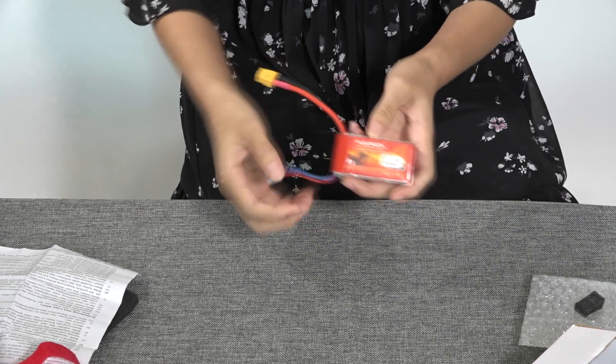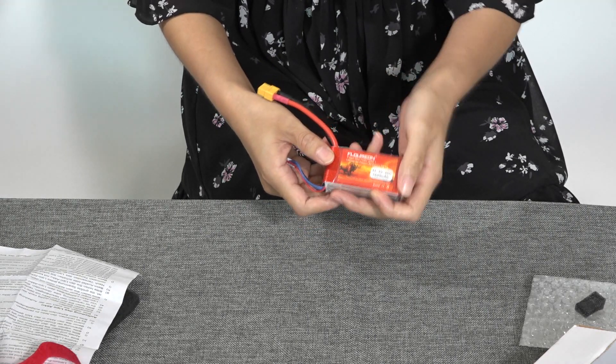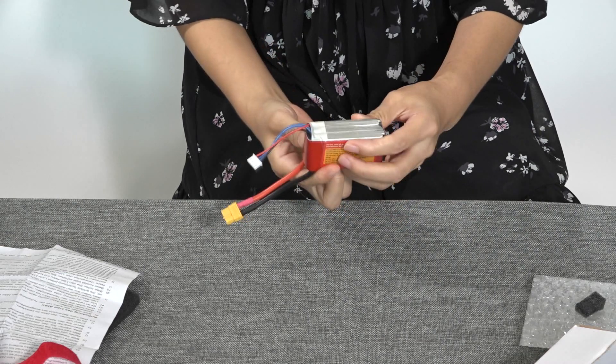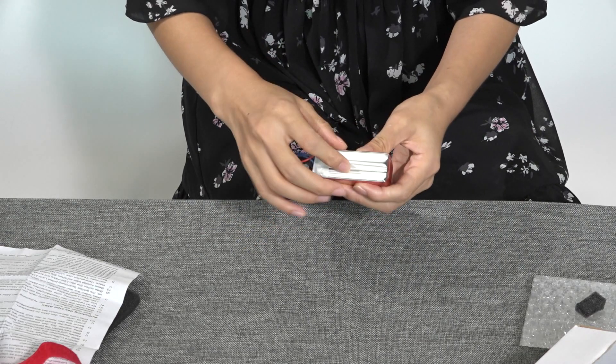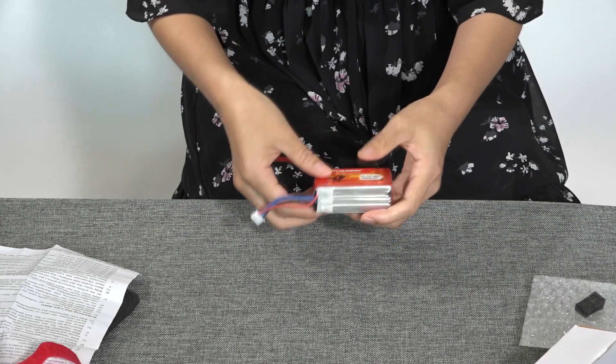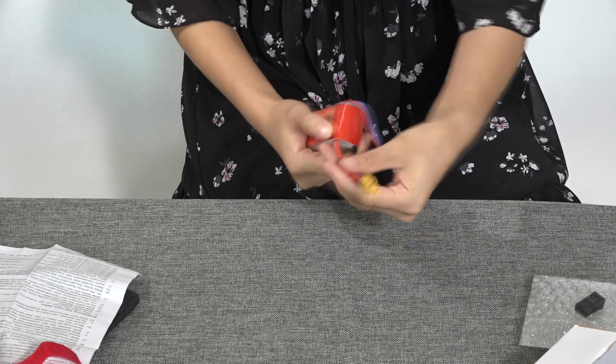As you can see, the surface is flat and smooth. Here you can see it's 3S, 35C, and 1500 milliamp hours. It's made with a hard case, no sore spots, no swelling, and the lead wires are perfect too. The longer one is for plugging into the RC vehicles, the shorter one is for charging.